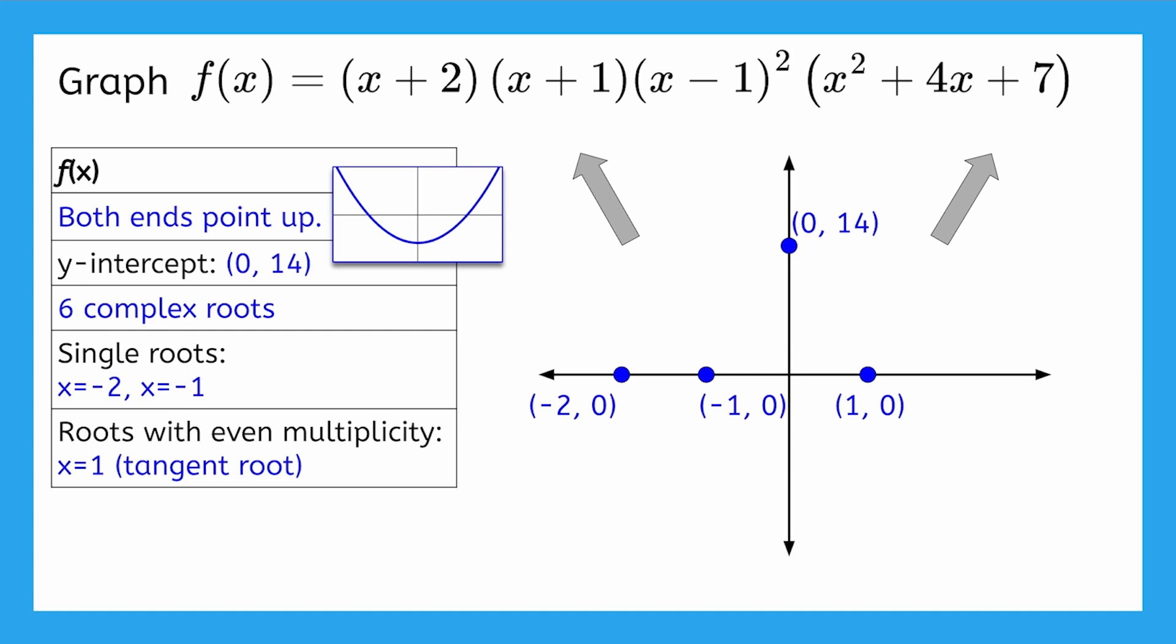Because there are no other real roots to the right, and our function is going to increase to the right, we know that the root at 1, 0 must look something like this.